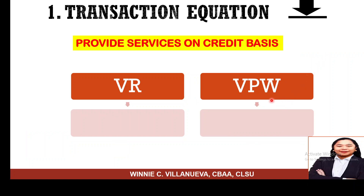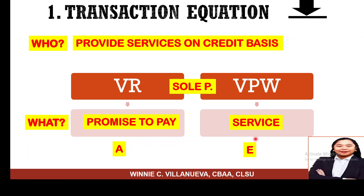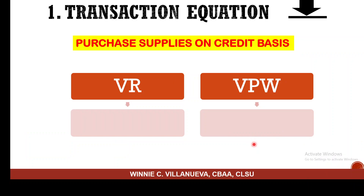Third example: you rendered a service, but the customer charged it — it was on account. Always from the perspective of the sole proprietorship. What did the business receive? A promise to pay. When someone owes you, you only receive a promise that they will pay. What did the business give out? Service. Both are rights. The promise to pay gives you the right to collect — that is an asset (receivable). The service rendered is income — part of equity. The transaction is between the business and the customer.